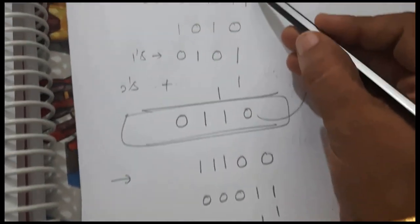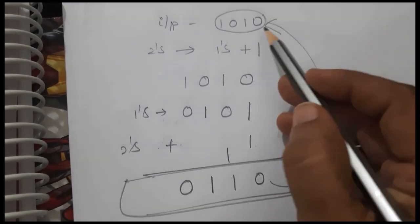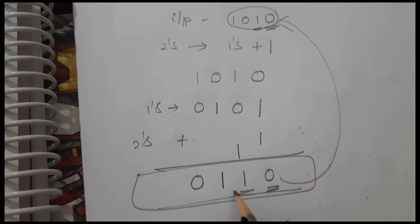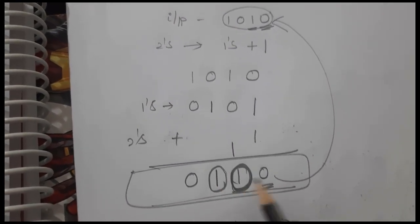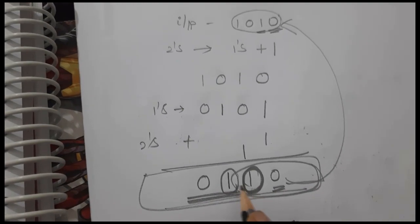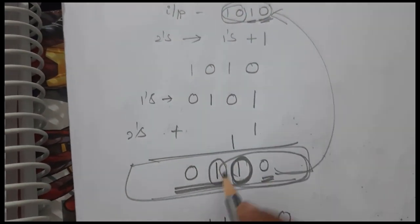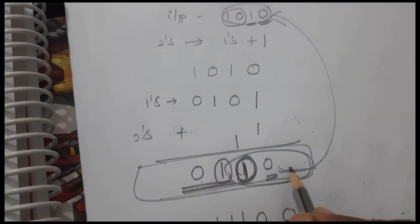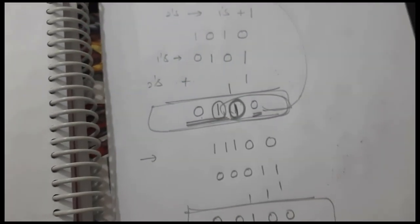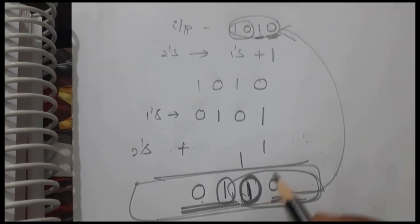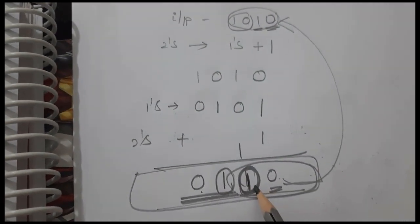So what are your observations from these two examples? When you compare the input string and its respective 2's complement, you see that the MSB bits before the first 1 remain as 0s. Whenever the first 1 comes in the input, that same 1 appears in the 2's complement output. Then immediately after the first 1, whatever the input digits, they will be complemented — 0 becomes 1 and 1 becomes 0.